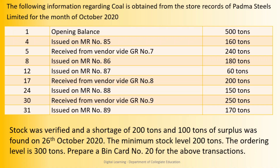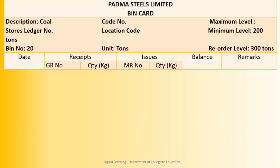First step: prepare the format. Name of the company: Padma Steel Limited, bin card. Description: coal. Code number not given. Maximum level of stock not stated. Store ledger number and location code not given. Minimum level 200 tons. Bin number 20. Units expressed in tons. Reorder level 300 tons. The normal format includes: date; under receipts — GR number and quantity; under issue — MR number and quantity; balance and remark.